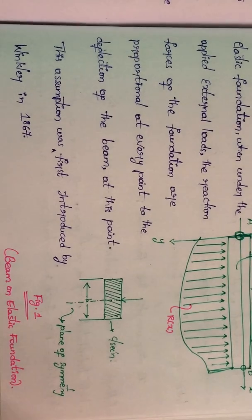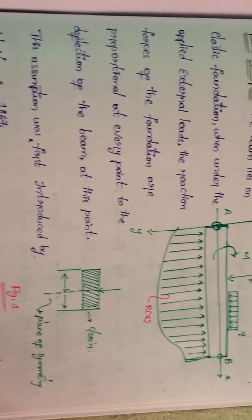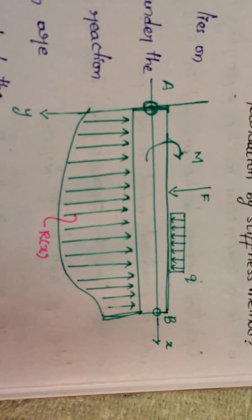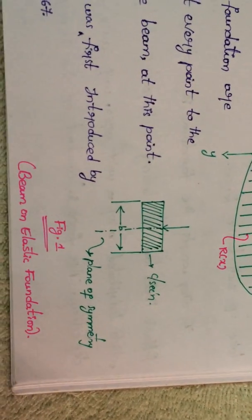And next one, the assumption was first introduced by Winkler in 1867. The figure one indicates the beam on elastic foundation. Once you take a brief look on the figure, this is the view and next one this is the cross sectional view as the plane of symmetry.